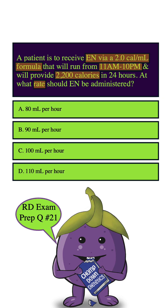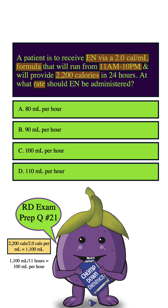So we're just going to take the 2,200 calories and divide that by 2.0 calories per ml. And that'll give us the total milliliters that's going to be delivered, which will be 1,100.